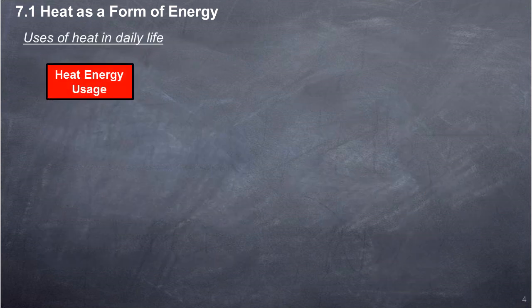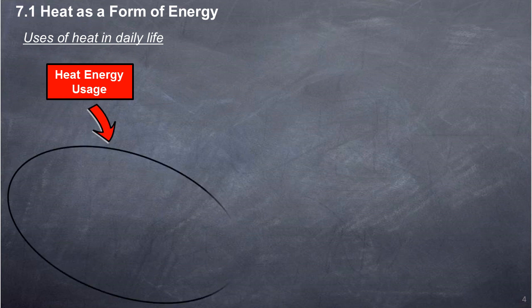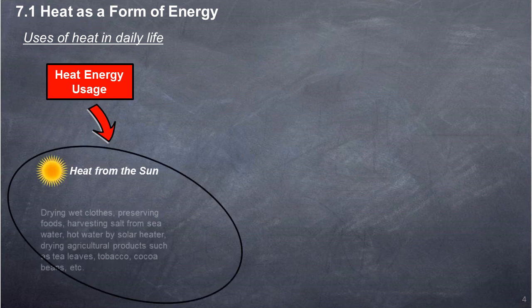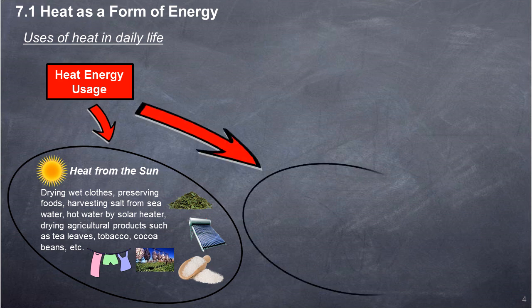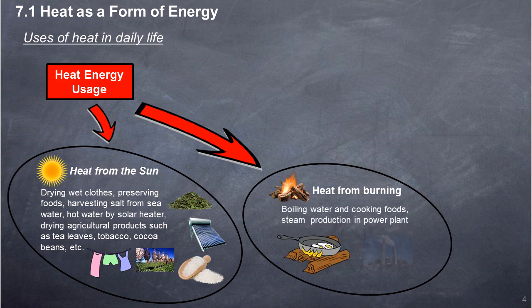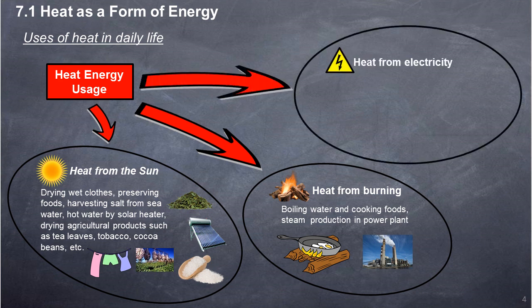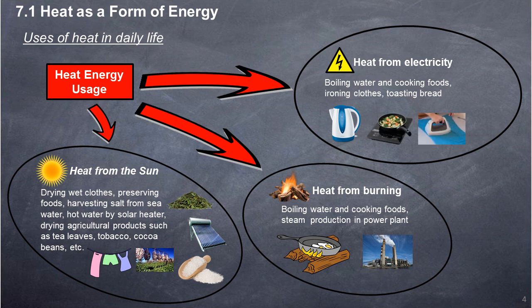Uses of heat in daily life. Heat from the Sun: drying wet clothes, preserving foods, harvesting salt from sea water, hot water by solar heater, drying agricultural products such as tea leaves, tobacco, cocoa beans, etc. Heat from burning: boiling water and cooking foods, steam production in power plant. Heat from electricity: boiling water and cooking foods, ironing clothes, toasting bread.